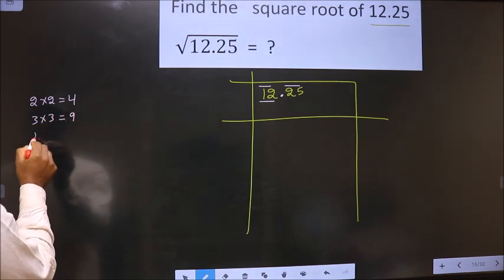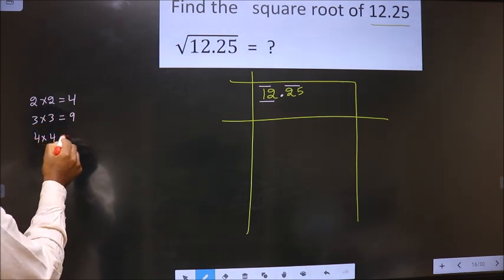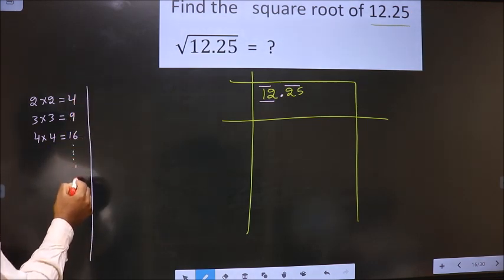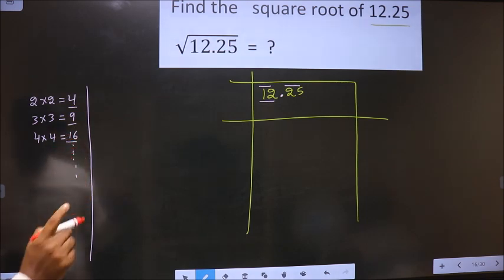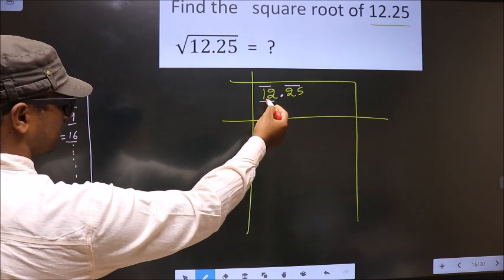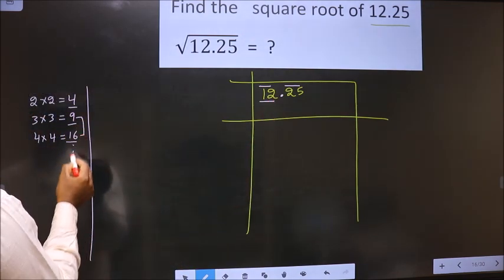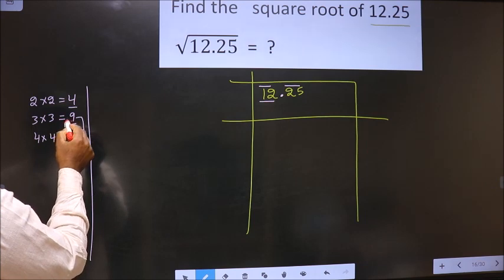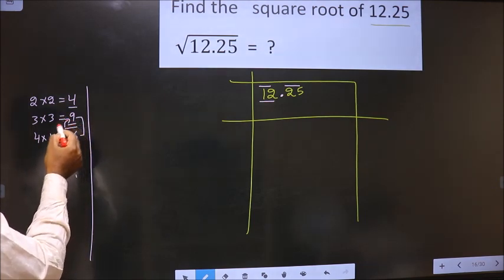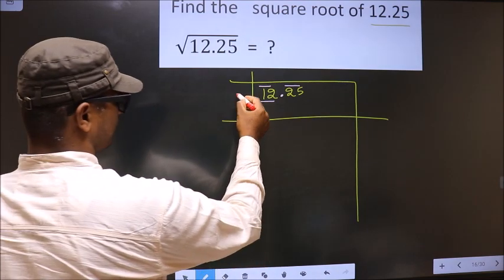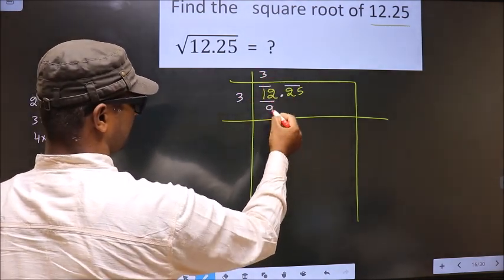3 into 3, 9. 4 into 4, 16. And so on. These numbers are called perfect square numbers. Here we have 12. 12 lies between these two numbers. So we should take the smaller number that is 9. 9 is from 3, so 3 into 3 is 9. So we take 3 here, 3 here, 9 here.